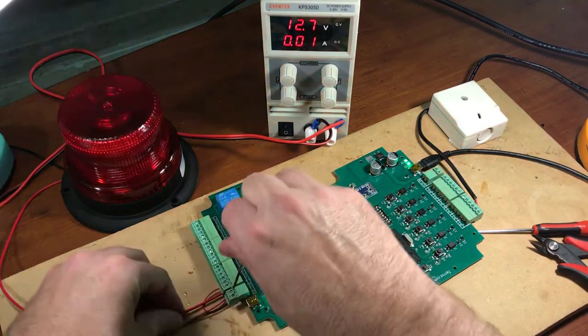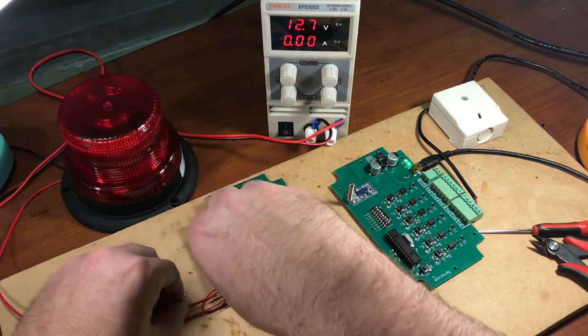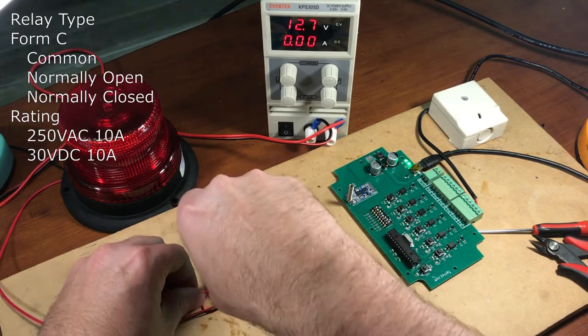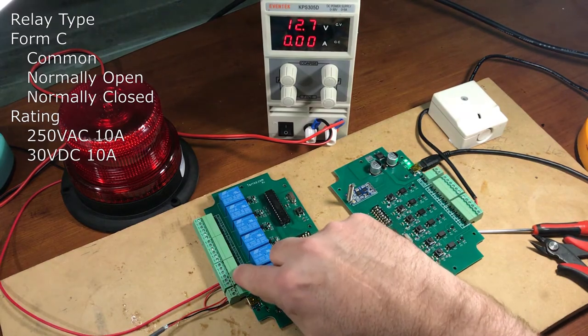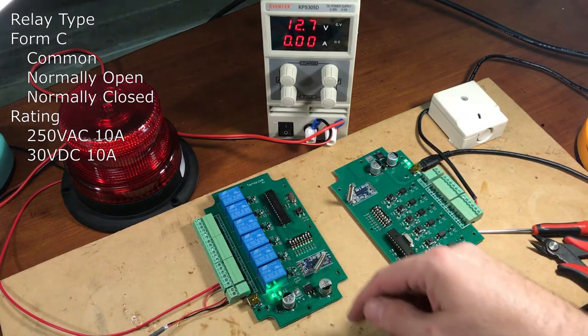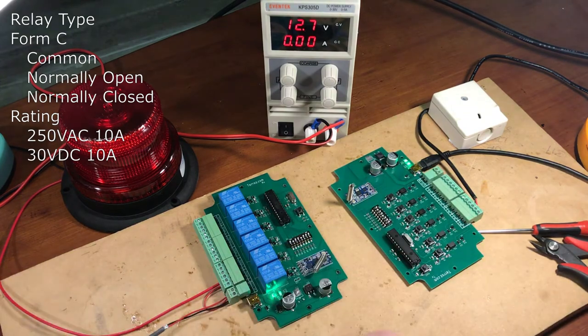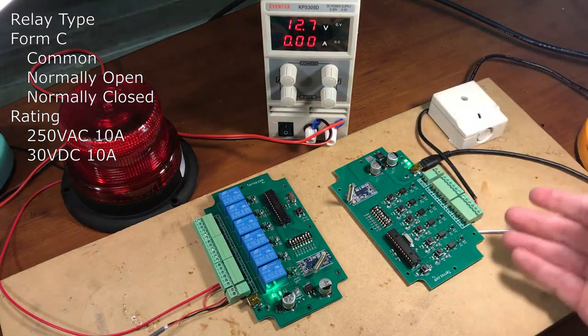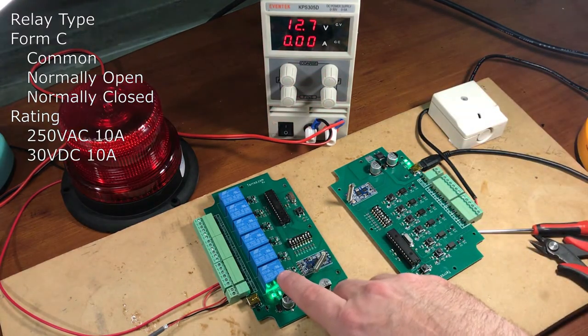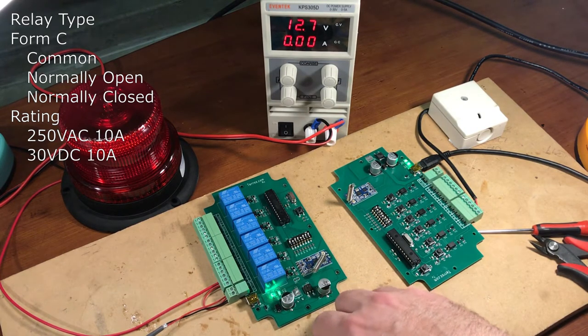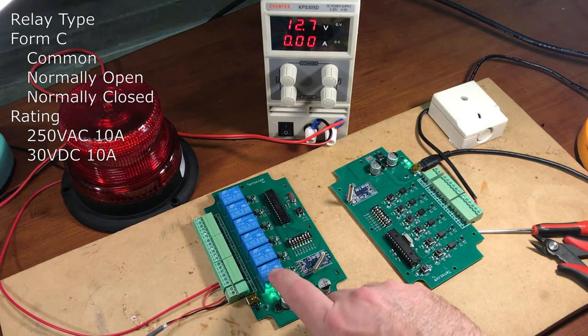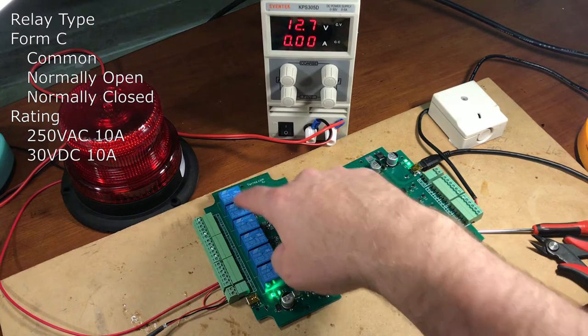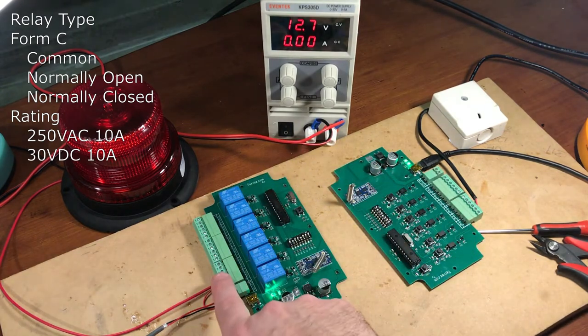So I'm going to go ahead and unplug that so it's not in your face so much. And again, since these relays are form C relays, meaning that they have a common, a normally open, and a normally close, so your relays can act as a constant on, constant off, and of course change status once the input. These relays are rated for 250 volts AC 10 amps, 30 volts DC 10 amps, so pretty powerful little relays and you got a lot of options.